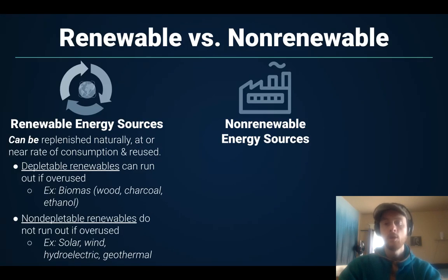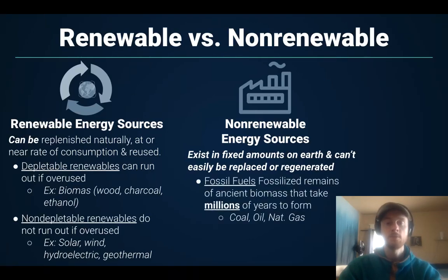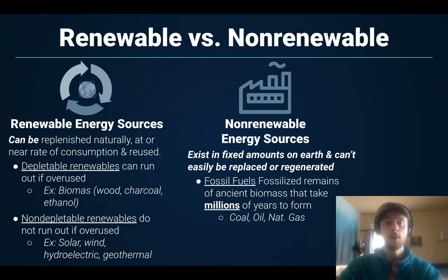Non-renewable energy sources are depleted by their use — they exist in fixed amounts on Earth and will run out when overused. The best example is fossil fuels. These are the fossilized remains of biomass that get compressed under rock layers over millions of years. The key is that we're using them far faster than they regenerate — they do not regenerate on any timescale that humans can access. They are coal, oil, and natural gas.